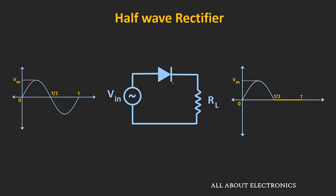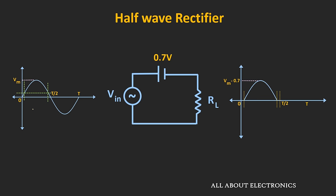So far in our analysis, we have assumed that the diode connected in the rectifier circuit is an ideal diode. But now let us also consider the forward voltage drop across the diode. The diode will get forward biased only when the applied input voltage is more than the threshold voltage. Here we are assuming that the connected diode is a silicon diode, which means it has a threshold voltage of 0.7V. So the diode will get forward biased only when the input applied voltage is more than 0.7V, and the circuit will start conducting only during this period. The peak voltage at the output waveform will be slightly less than Vm — it will be equal to Vm minus 0.7.